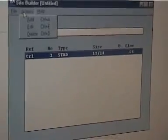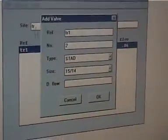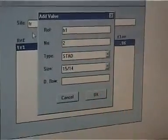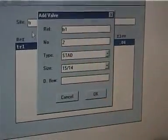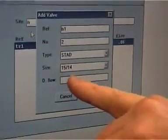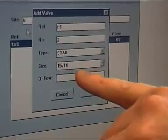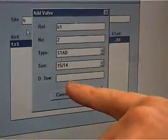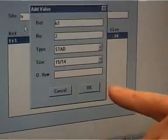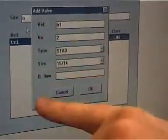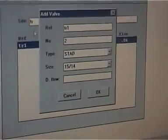Then to enter in the next action, we do exactly the same, which is ADD. It comes up with TR1, which is the reference we gave it, and the valve number. Valve doesn't change, it might stay at 15-14, or if you've got different valves in the system, you change it. You put in your desired flow rate, and then you choose OK. That brings it all down into the system.